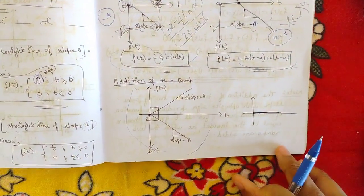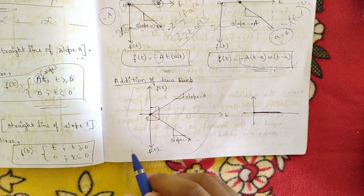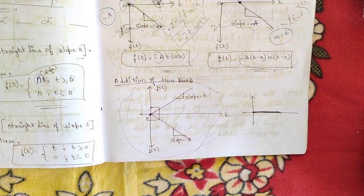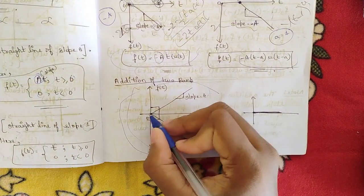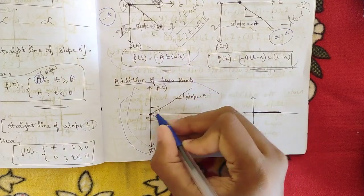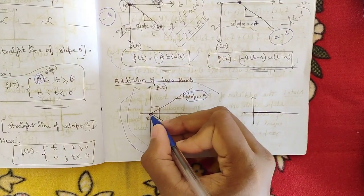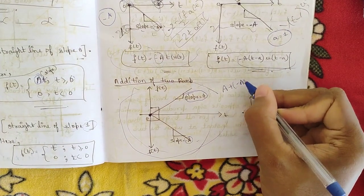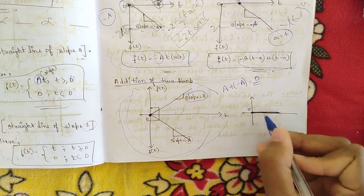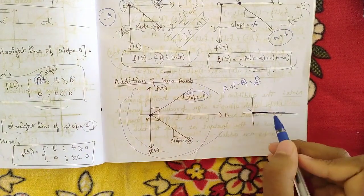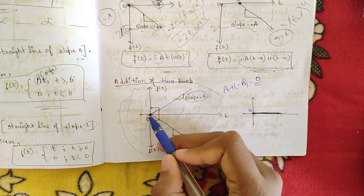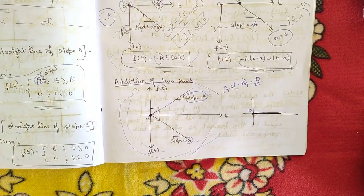Now let us see the addition of two ramp functions. When we add a ramp of slope +a and a ramp of slope −a both starting from the same point, the resultant is zero. The positive slope and negative slope cancel each other out, giving a zero slope from that point onwards. So the addition of two ramps with opposite slopes from the same point is always zero.